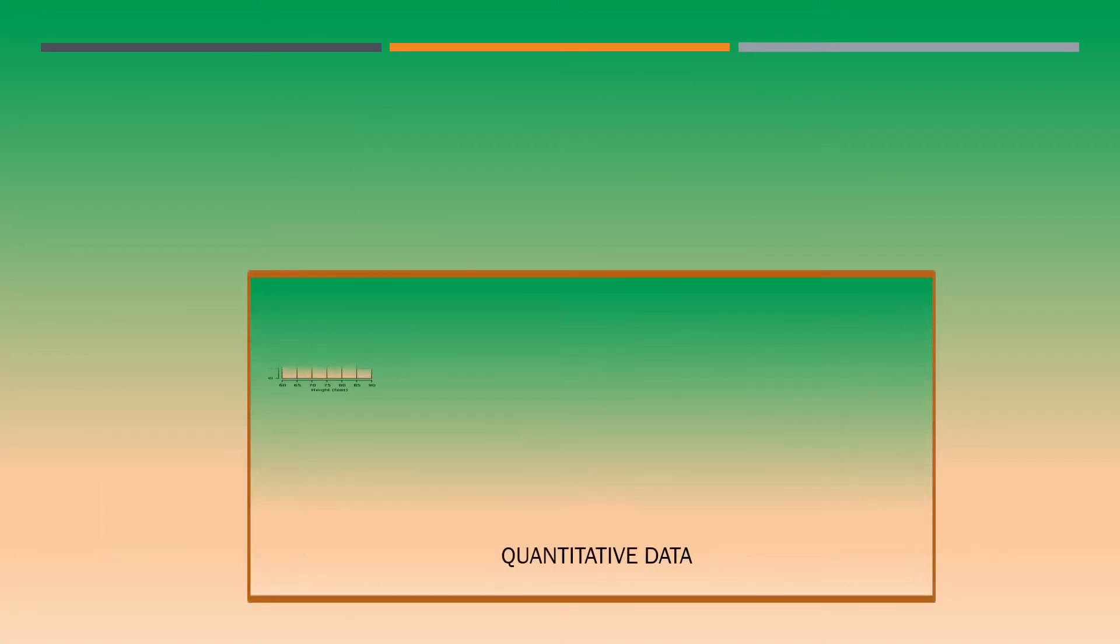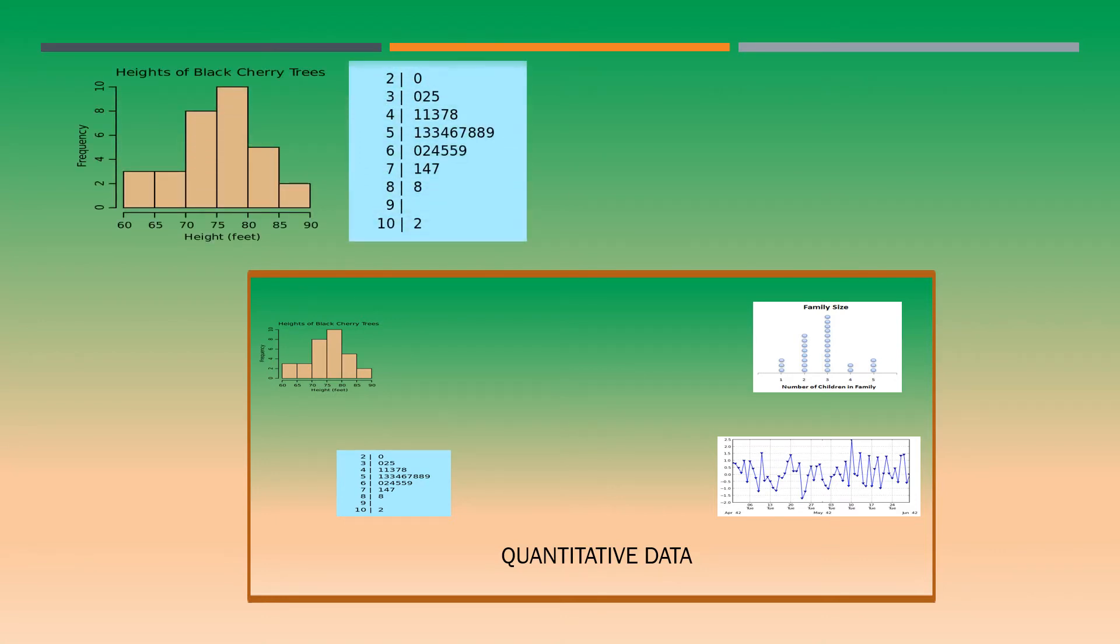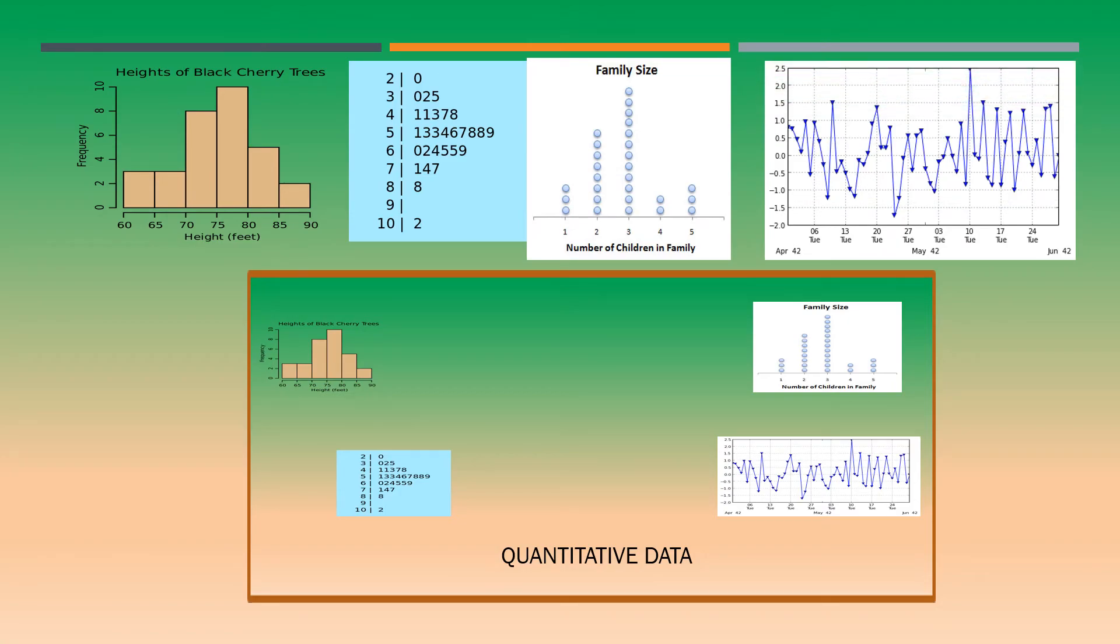For a quantitative one, we have four types of graphs, which is a histogram, stem and leaf plot, dot plot, and the time plot. These are the five plots we are going to consider.